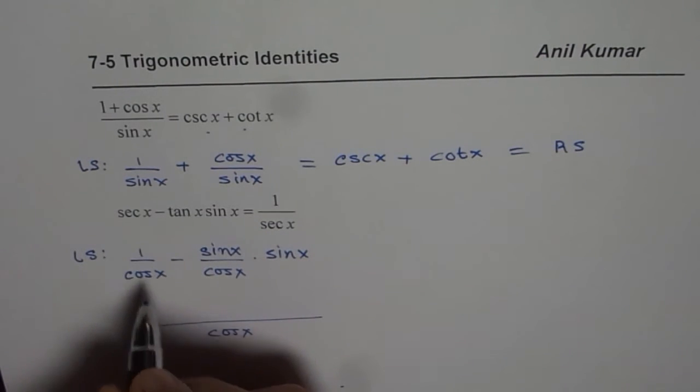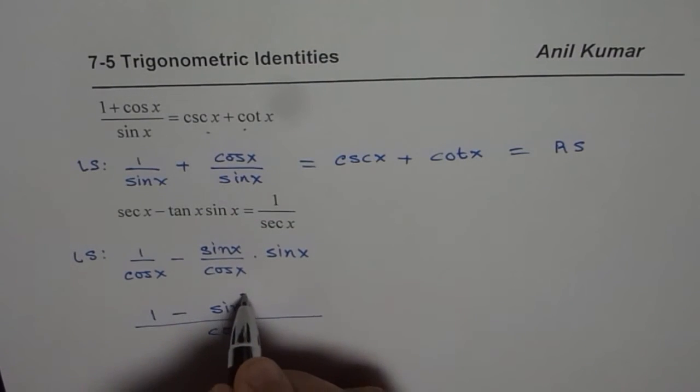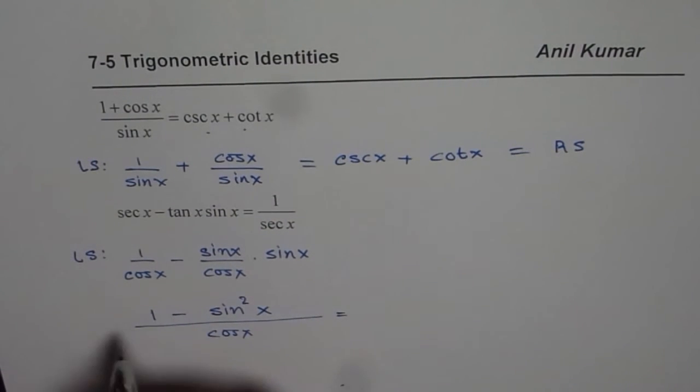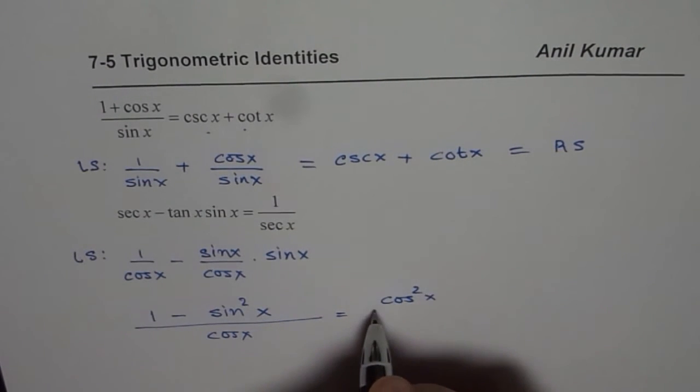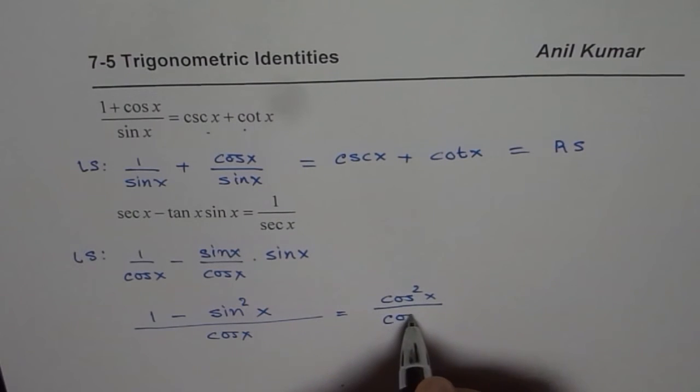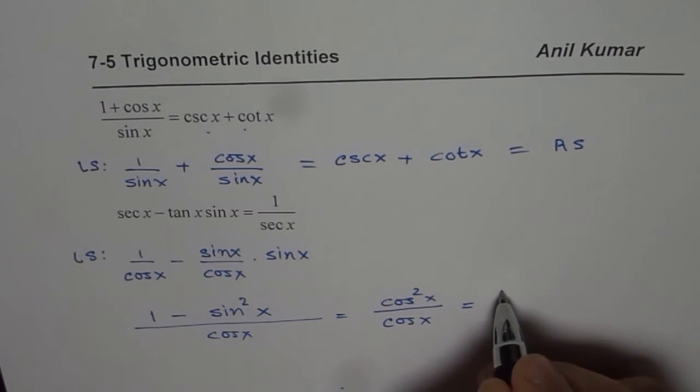So we get 1 minus sine squared x. Now, what is 1 minus sine squared x? 1 minus sine squared x is cos squared x. So it is cos squared x over cos x which gives you just cos x.